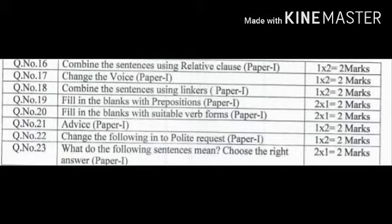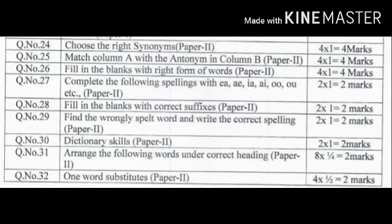Next we move on to vocabulary. Now we see the vocabulary part. The vocabulary part is changed from 20 marks to add 4 marks, so 24 marks total. Question number 24 is synonym, four marks. Question number 25 is antonym, that is also four marks. Question number 26 is fill in the blanks with the right form of words, four marks. Question number 27 is vowel sounds and vowel clusters, that is two marks.